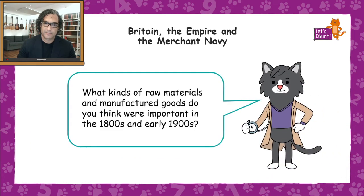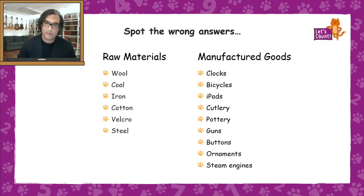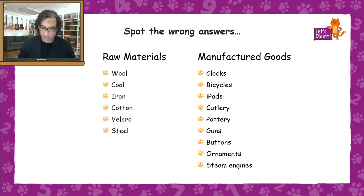Doc's question is: what kinds of raw materials and manufactured goods do you think were important to people's lives in the 1800s and early 1900s? Here's a list of raw materials and manufactured goods — can you spot any wrong answers? Take a moment and talk among yourselves and with your partners to see if you can spot those wrong answers.